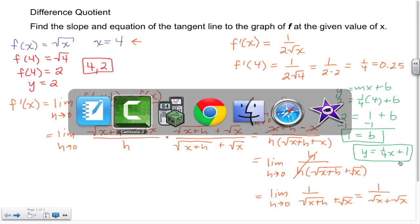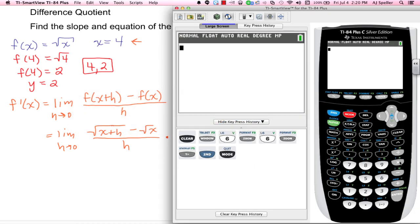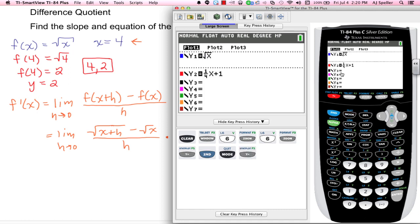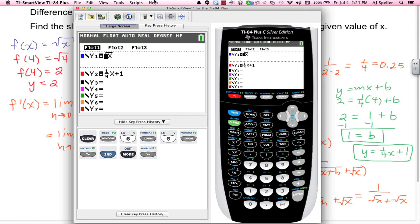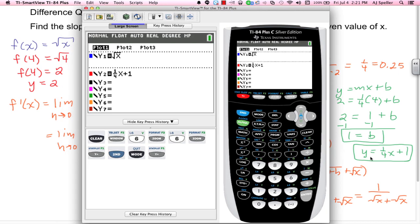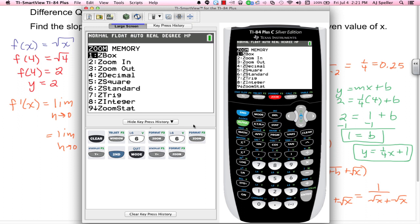All right, now let's pull up the calculator so that we can verify these results. First, let's go to y equals. And when you look at y equals you see that I've already put in the original equation root x and you'll see that I also put in the line that's tangent to the original function as 1/4 x plus 1. And let's go to zoom and let's go to 6 where it's standard so we can see what this thing looks like.